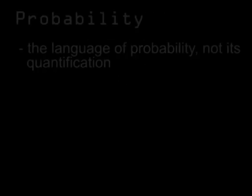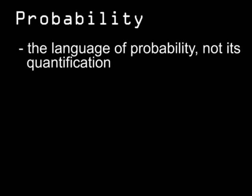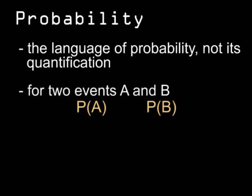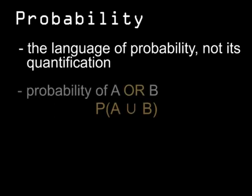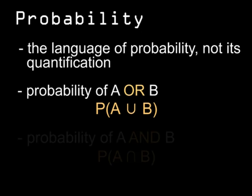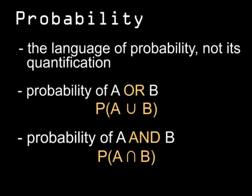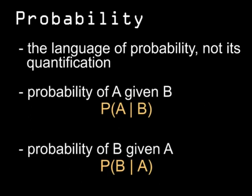Switching gears to probability — this is just about the logic and language of probability, not solving problems. Keep the concepts about sets in mind. The probability of a single event A is represented as the probability of A. A separate event B has a probability of B. Taking the probability of A or the probability of B — that's a logical OR — gives you the probability of the union of A and B. You can bring back the concept of intersection too: it's the probability of both A and B being true. If you think the probability of event A depends on event B, you talk about the probability of A given B.